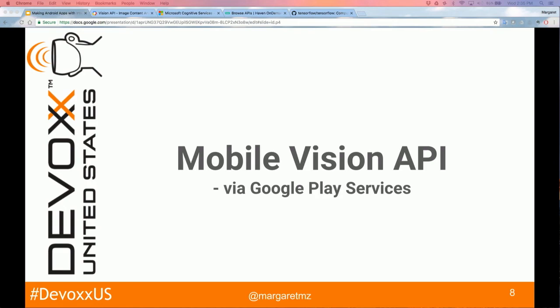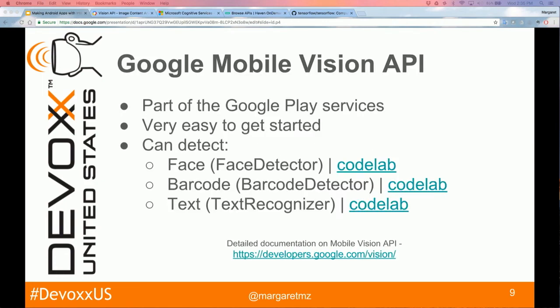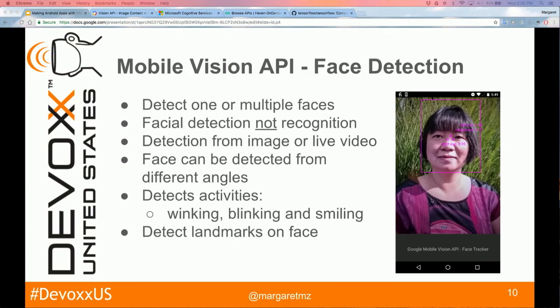The first option is to use the Mobile Vision API as part of Google Play Services. For Android developers it's really easy to use — it's been part of Google Play Services since the 7.8 release from August 2015. It can detect faces, barcodes, and text, and I've included links to codelabs for you to try out later.